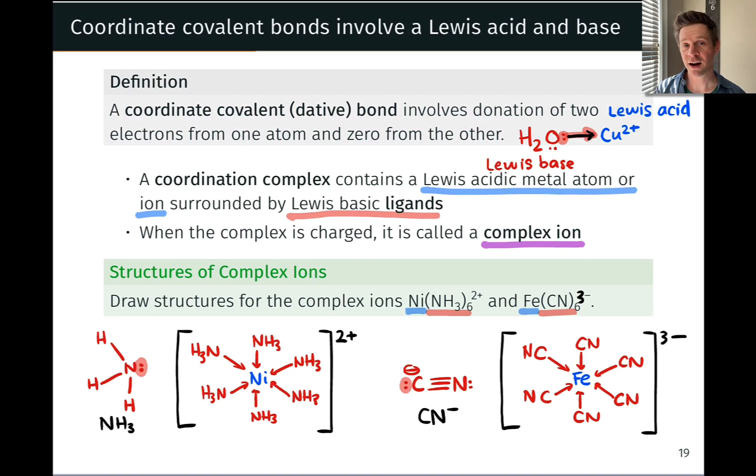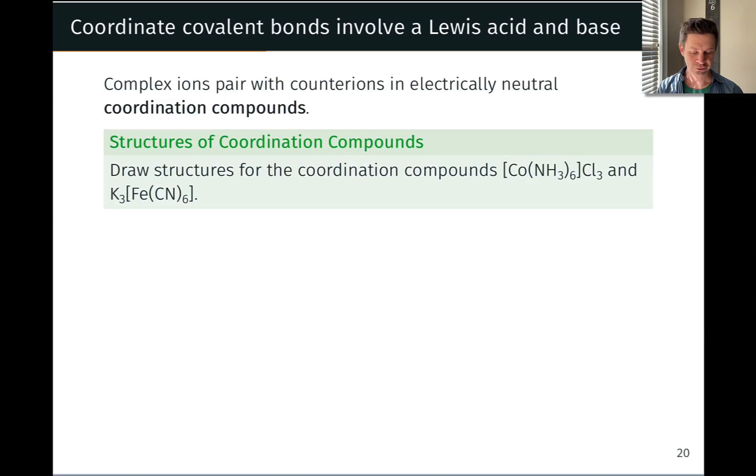Each of these complexes has a net charge, so the next natural question is how do these show up in actual compounds, actual solids for instance, that we can actually get our hands on? Well, they have to pair with counter-ions so that the overall charge of the entire compound is neutral, and the result when you take a charged coordination complex and put it together with a counter-ion to make the overall result neutral is known as a coordination compound.